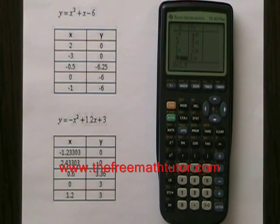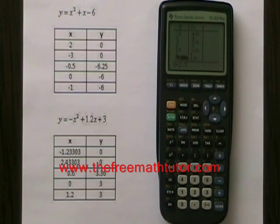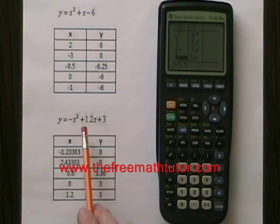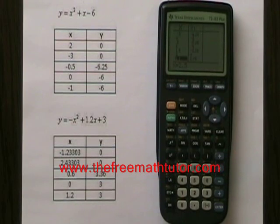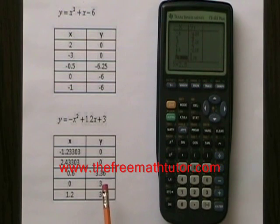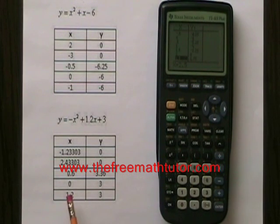But what if the x coordinates of the key points are not multiples of 0.5, or commonly found numbers? Let's look at this second equation. We have y equals negative x squared plus 1.2x plus 3. The only one of these points that I'm liable to find in my table of values in the calculator is the y-intercept, 0, 3. But I have ways of finding the other key points.